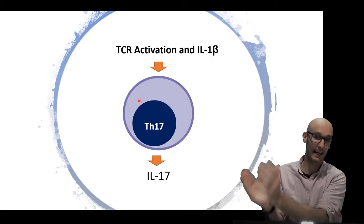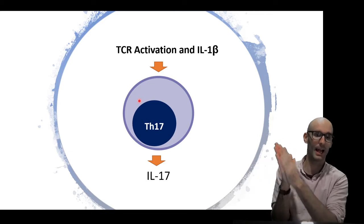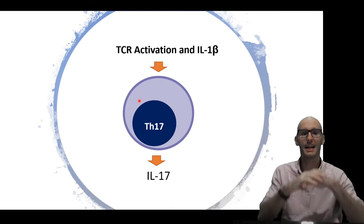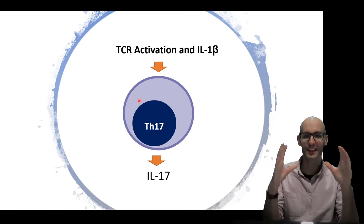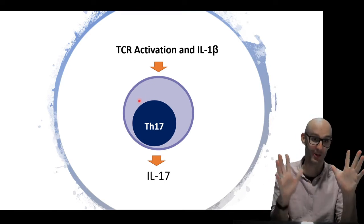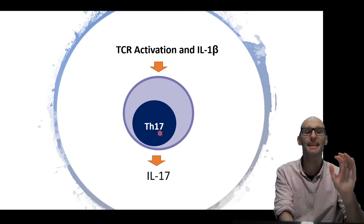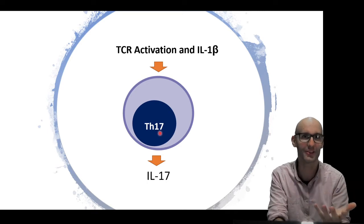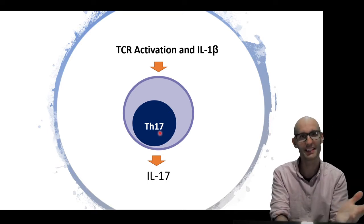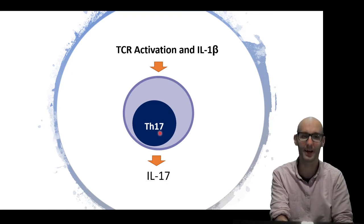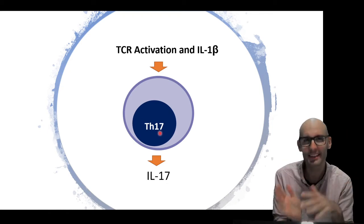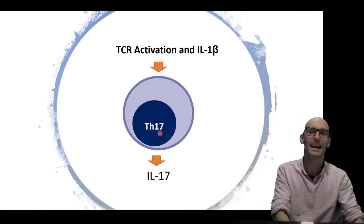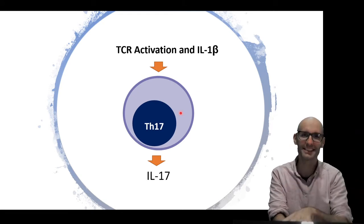Now we've got our T cell receptor activation — antigen recognition going on — and we've got the release of interleukin-1 beta, which is one of the many classical signaling cascades that can lead to Th17. There's a lot more. And then that Th17 T helper cell will release IL-17. This is the famous cytokine that gave the Th17 its name. Th17 releases IL-17. It's a little bit confusing because the Th1 cell releases IL-2, but biologists are never consistent about how they name things. So a Th17 cell releases IL-17.